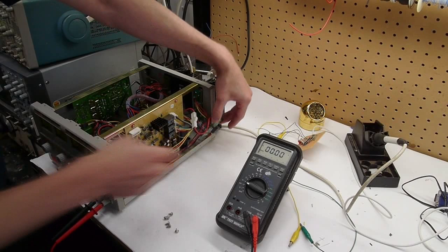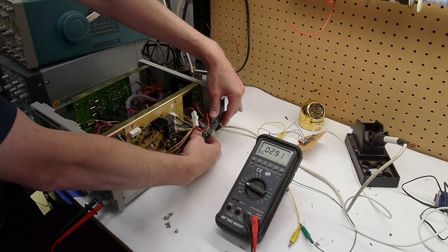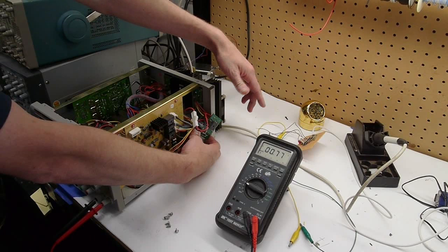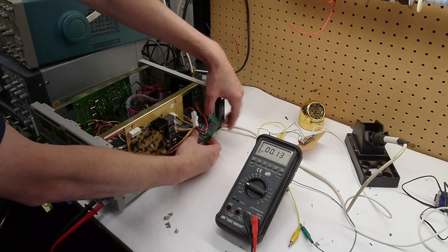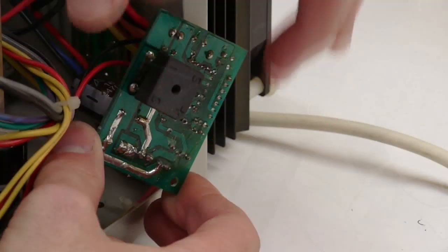So the 5V regulator board is here, and we're monitoring the output right now, which we're not getting anything. But if I tweak the board, there's the 5V regulated output, and if I let the board go, we're back down to zero. So there's obviously a solder joint that broke or a trace that broke or something on there. So let's take a closer look.